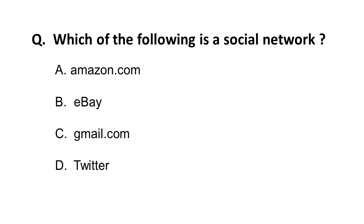The next question asks: which of the following is a social network? Social networking platforms allow you to connect with multiple people online. Facebook and Twitter are social networking sites; Orkut was also a social networking site. Amazon and eBay are e-commerce or online selling companies, and Gmail is a webmail service. So the correct answer is Twitter. You should also remember when these companies were founded, as questions may be asked on that.